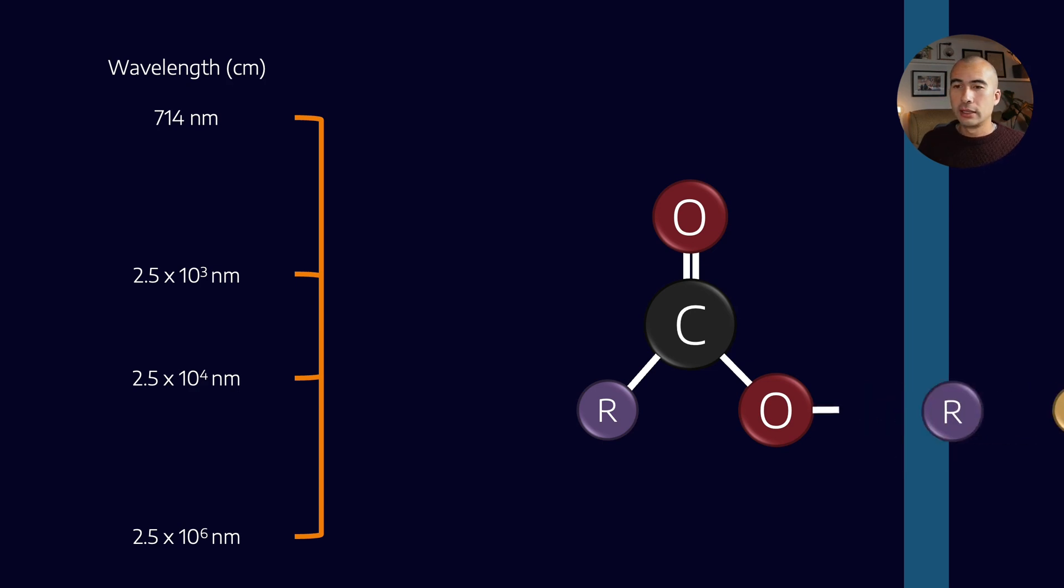However, if we swap out that hydrogen for an R functional group, what I now have is an ester. But the infrared light doesn't know that. So it's going to, at the same wavelength, still excite that carbon double bond oxygen, and it's still going to pass through the rest. So to the infrared detector, an ester looks exactly like a carboxylic acid.